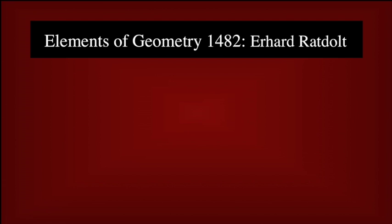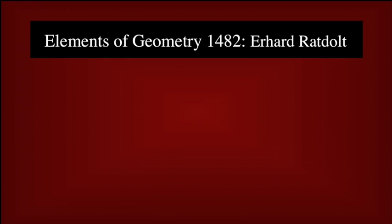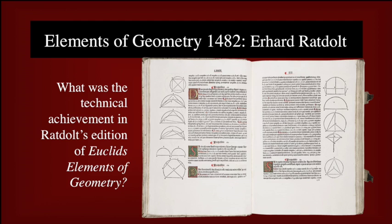Rathold is thought to be the first publisher of scientific material. He is most famous for his 1482 first edition of Euclid, adapted from a medieval translation. Here are two spreads from Elementary Geometry. Please note the geometric forms in the margins, and be prepared to discuss what was the technical achievement in Rathold's edition of Euclid's Elements of Geometry.